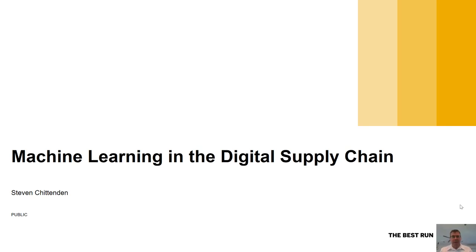Hello, welcome to another session on Digital Supply Chain with myself, Steve Chittenden from SAP. Today we're going to be talking about a really interesting topic of machine learning, often called artificial intelligence in our world. One of the things I want to start off with is a brief description of what is the difference between artificial intelligence, the different levels of that, and what we're dealing with within our system in terms of what we call machine learning.